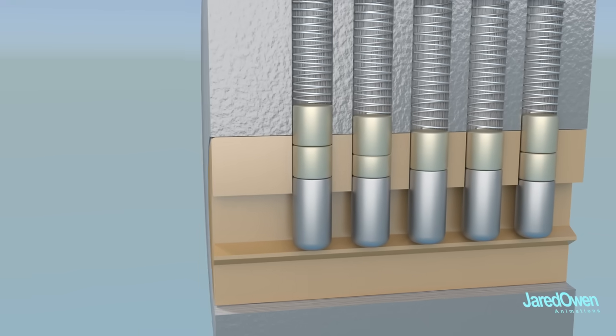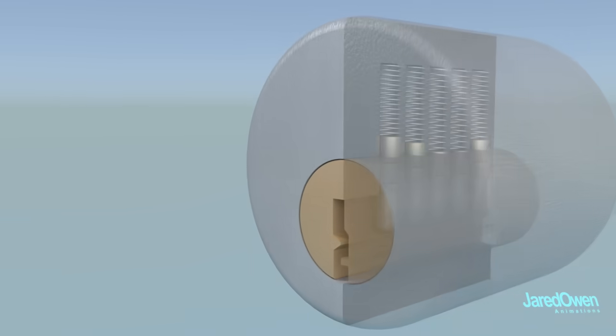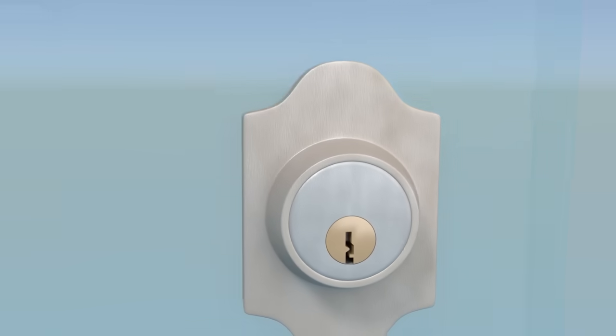So that's the basics of how a pin tumbler lock works. There's a whole lot going on every time you use a key to open a lock.